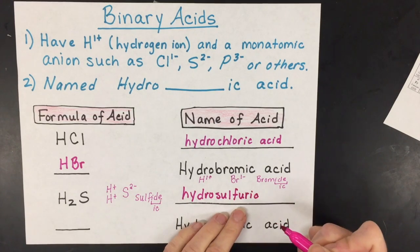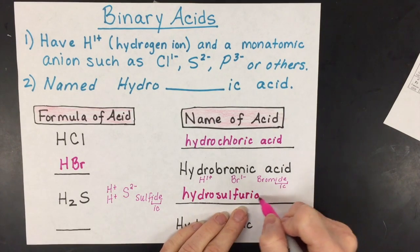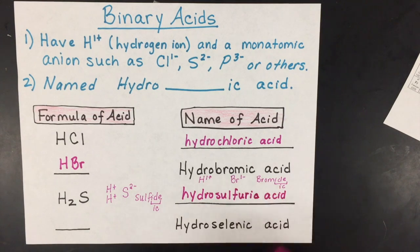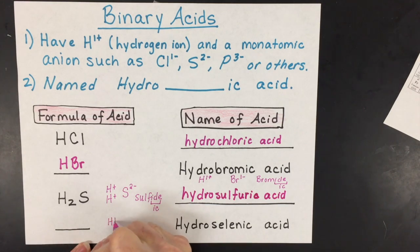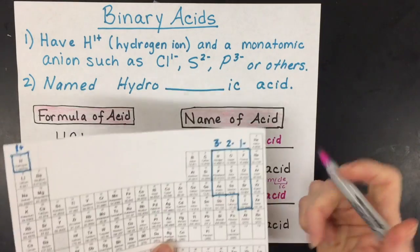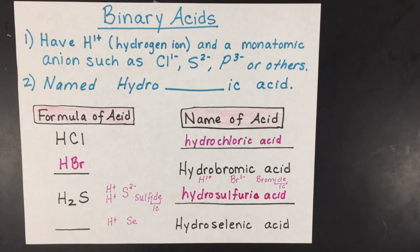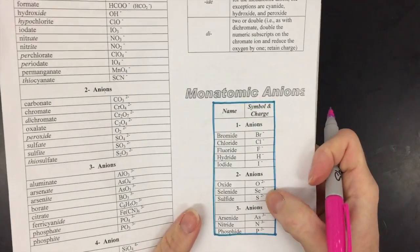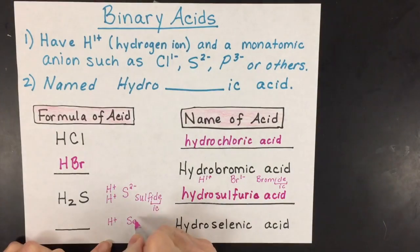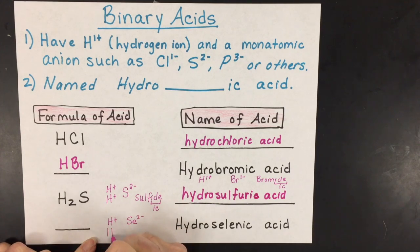The next one is hydroselenic acid. Again, we're going to have the hydrogen ions, and then we're going to have the element selenium as an ion. Predicted at its placement, it's a two minus on the periodic table, or you might have an ion sheet that lists it as a two minus. That means I'm going to need two hydrogen ions to balance that charge.